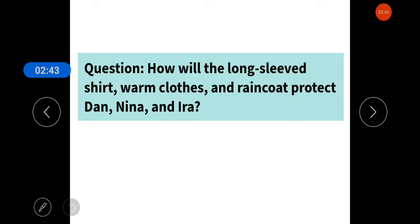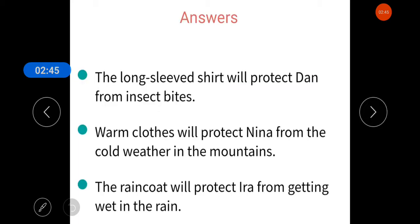So, let's discuss the answer. The long-sleeved shirt will protect Dan from insect bites. Warm clothes will protect Neena from cold weather in mountains. Next. The raincoat will protect Ira from getting wet in the rain. I hope the answer is clear to you all.